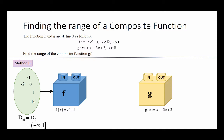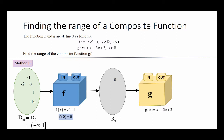So in this case, first we will take a value from the domain of gf — let's say 0 — and this will go into the component function f first, which will come up with an output, in this case 0. This output will go into the set of values known as the range of f. Then this value from the range of f is fed into the second component of the machine, which is function g. Function g will act on this value and come up with an output, which is 2 in this case. This output will form the set of values known as the range of gf.